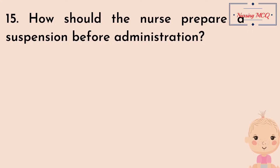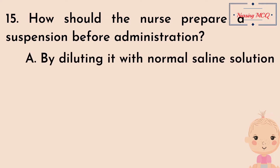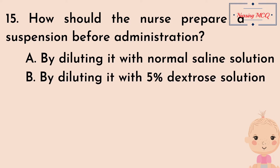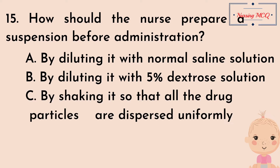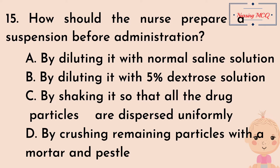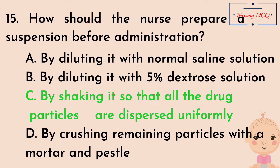Question number 15. How should the nurse prepare a suspension before administration? Option A, by diluting it with normal saline solution; Option B, by diluting it with 5% dextrose solution; Option C, by shaking it so that all the drug particles are dispersed uniformly; Option D, by crushing remaining particles with a mortar and pestle. The right answer is Option C: by shaking it so that all the drug particles are dispersed uniformly.